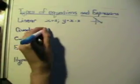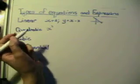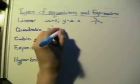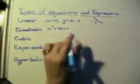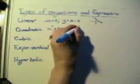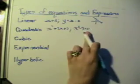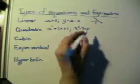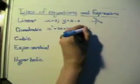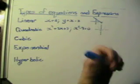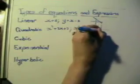A quadratic expression is one where the highest power is a square. For instance, x squared plus 2x plus 3 is a quadratic expression, and x squared minus 9 equals 0 is a quadratic equation. If you plot a graph of this, it gives you a curve which is called the parabola.